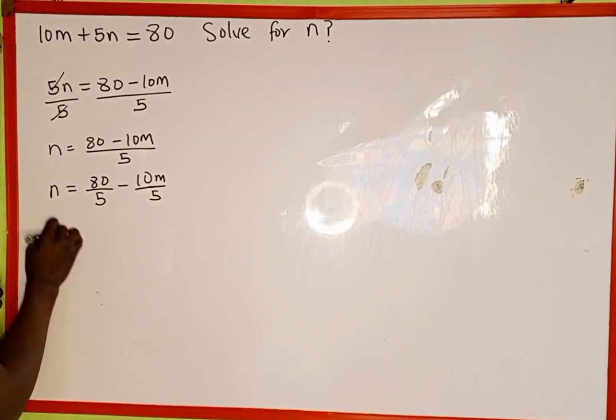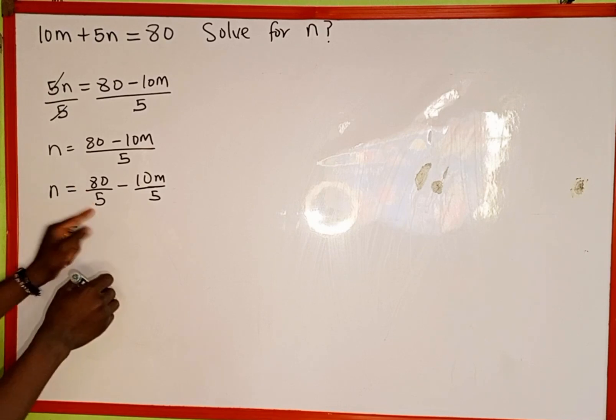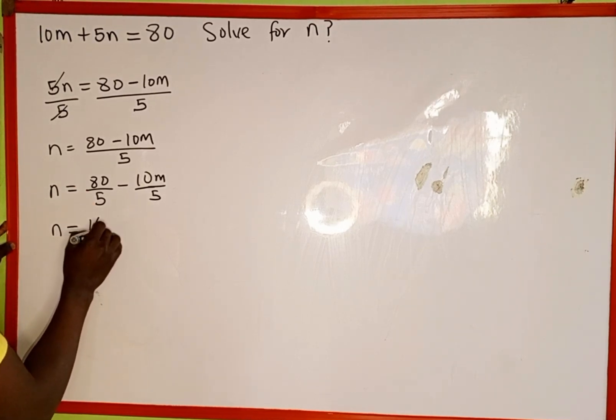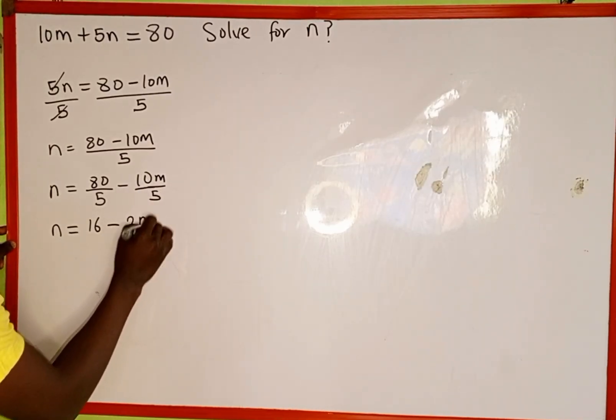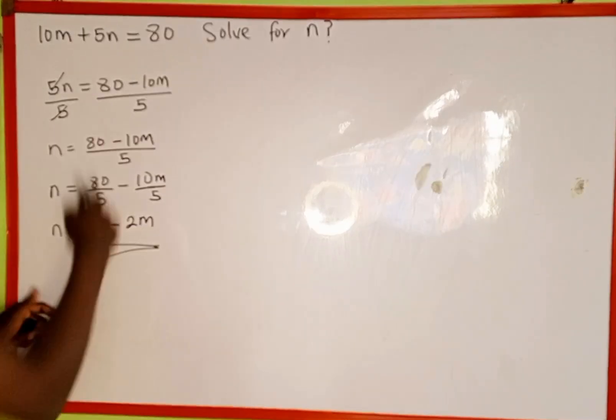So we're going to have n equal to 80 divided by 5, which is 16, minus 10 divided by 5, which is 2m. So this is the value of n from this equation.